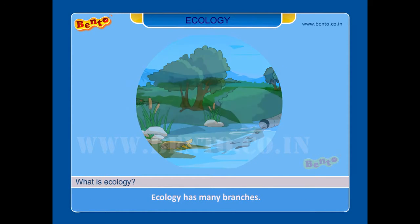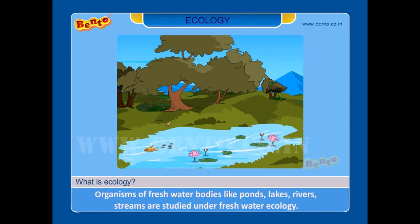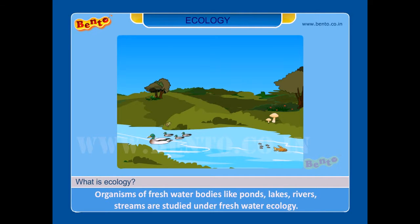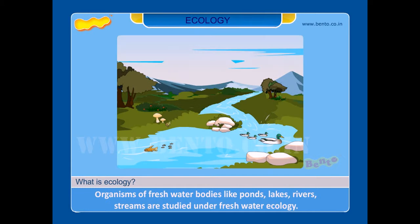Ecology has many branches. Organisms of freshwater bodies like ponds, lakes, rivers, and streams are studied under freshwater ecology.